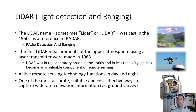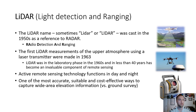LiDAR essentially bounces light waves off of an object or surface rather than sound waves. The first LiDAR measurements of the upper atmosphere using a laser transmitter were made in 1963, while radar goes all the way back to World War II — about 20 years earlier. LiDAR was in the laboratory phase in the 1960s and in less than 40 years became an invaluable component of remote sensing.